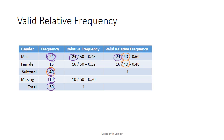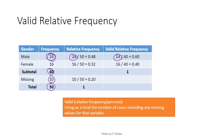Usually, the valid relative frequencies are the ones that are being reported, and they're simply often reported as relative frequency. We could therefore define valid as using as a total the number of cases excluding any missing values for that variable.